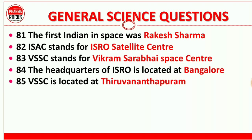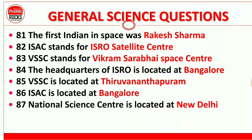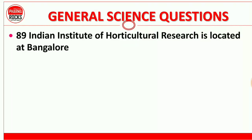Question 85: VSSC is located at Thiruvananthapuram. Question 86: ISAC is also located at Bangalore. Question 87: National Science Center is located at New Delhi. Question 88: Central Tobacco Research Institute is located at Rajahmundry. Question 89: Indian Institute of Horticultural Research is located at Bangalore.